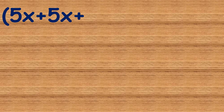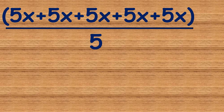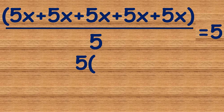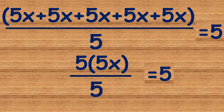So when we simplify this further, we have 5x in 5 places, which is 5 times 5x, all divided by 5, and that is equals to 5.